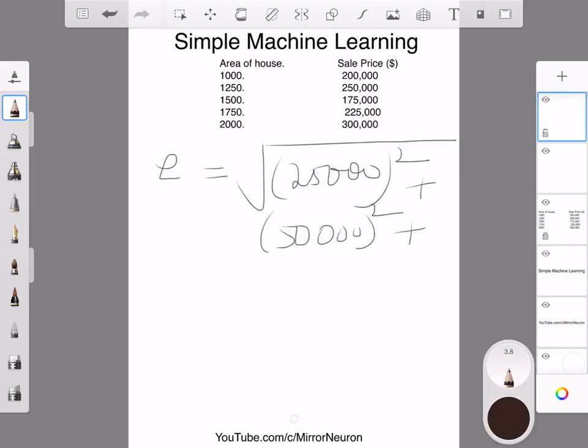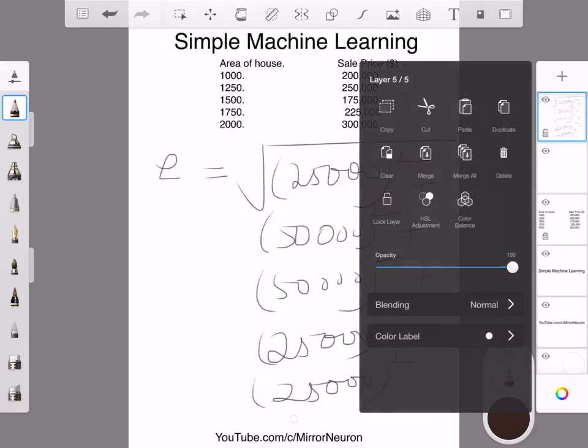Plus 50,000 squared, plus 25,000 whole squared. You can try this example by hand and it will be much more beneficial for you. This would be the total error, and if I take the square root, I would get an e of roughly about 83,000.